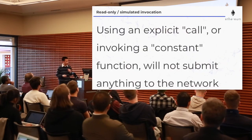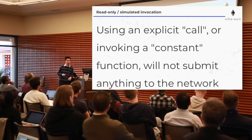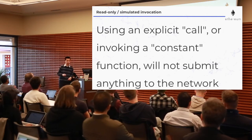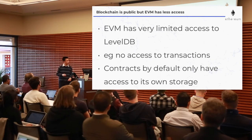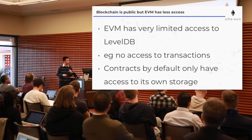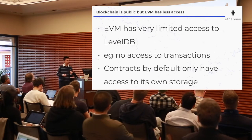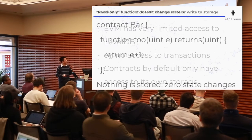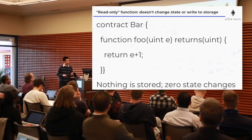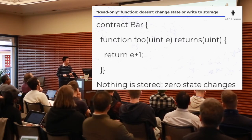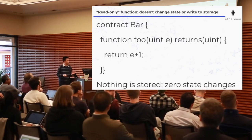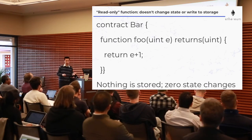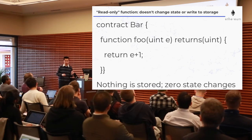Using an explicit call or invoking a constant function will not submit anything to the peer-to-peer network. The Ethereum Virtual Machine has very limited access to the underlying database — no access to transactions — and contracts by default only have access to their own storage. A read-only function doesn't change or write to storage; all it does is take input and return one more than the input, so nothing is stored and there are zero state changes.